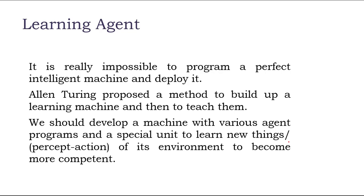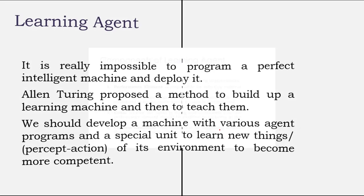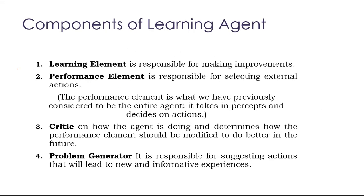Alan Turing proposed a method to build up a learning machine and then to teach them to work perfectly in an environment. We should develop a machine with various agent programs and a special unit to learn new things, or perceive actions, or take decisions about its environment to become more competent. A learning agent can be constructed with four components.